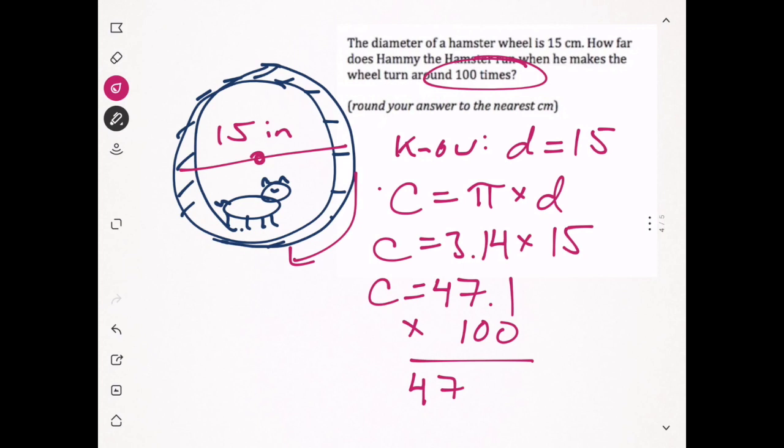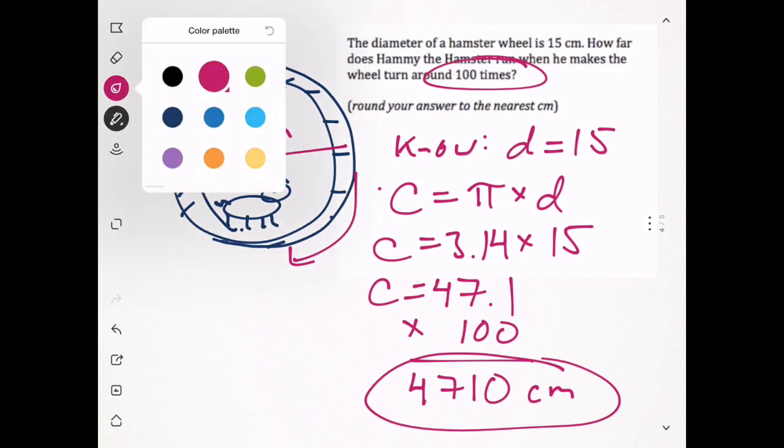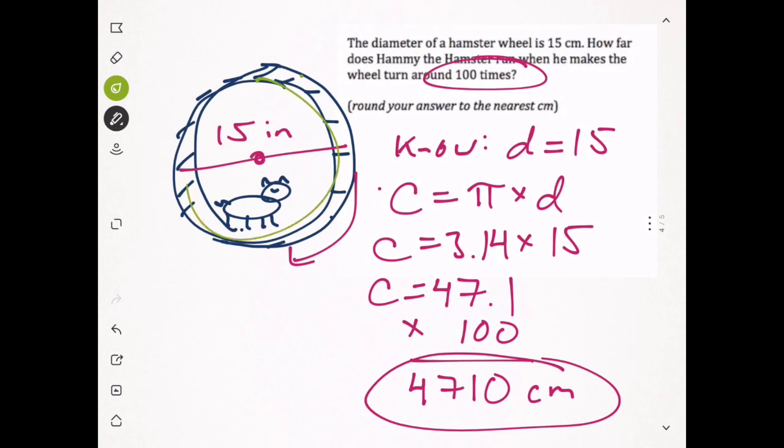We're not going to use a calculator for that, because when you multiply by 100, each digit just shifts up two place values. Four was in the tens place, now it goes up to the thousands. Seven goes to the hundreds, one goes to the tens. So we have 4710 centimeters is how far Hammy the hamster is going to run if he makes this wheel go around 100 times.